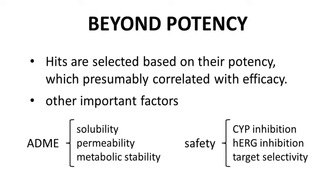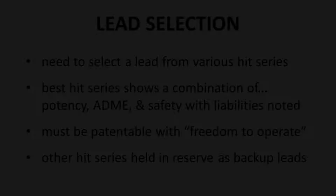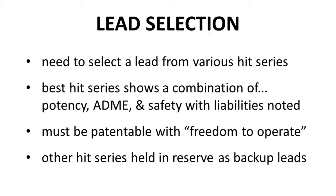All of these ADME and safety properties can be measured with in vitro assays, so the drug discovery group can very readily gather this information for various lead series. For example, in a large pharmaceutical company, these types of assays are routinely performed to support all the various concurrent research programs. With data in hand on the various HIT series, the discovery group will need to pick a series to advance as a lead — this is the lead selection step.